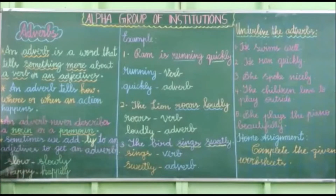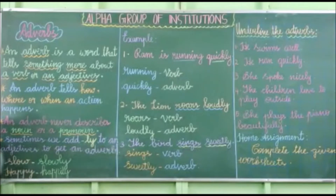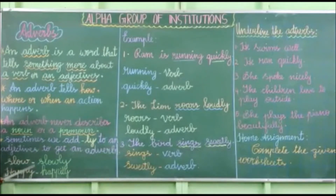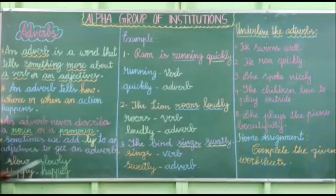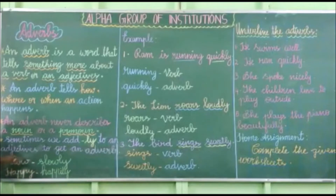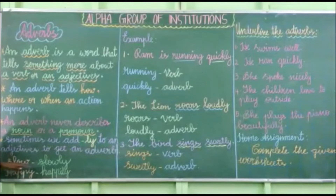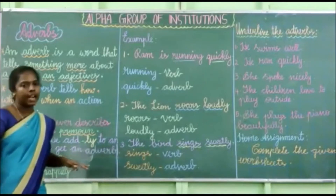For example: slow becomes slowly. If a word ends with Y, you remove the Y and add I, then add -LY. So happy becomes happily. Sometimes we add -LY to the adjective to get an adverb.